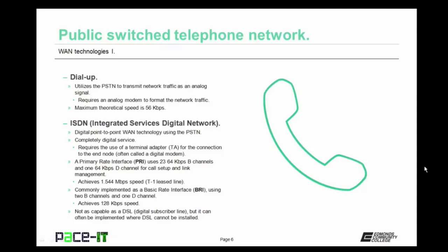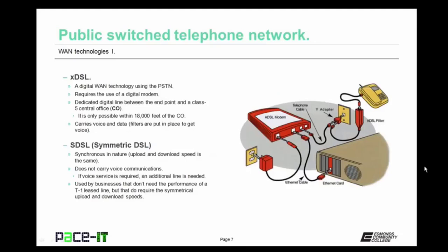DSL requires the use of a digital modem and uses a dedicated digital line between the endpoint and a class 5 central office, or CO. In order for the most basic forms of DSL to be installed, you have to be within 18,000 feet of the CO. DSL is capable of carrying voice and data. When it carries both, filters are put in place so the voice signal comes through without interference. Let's move on to the different types of DSL.